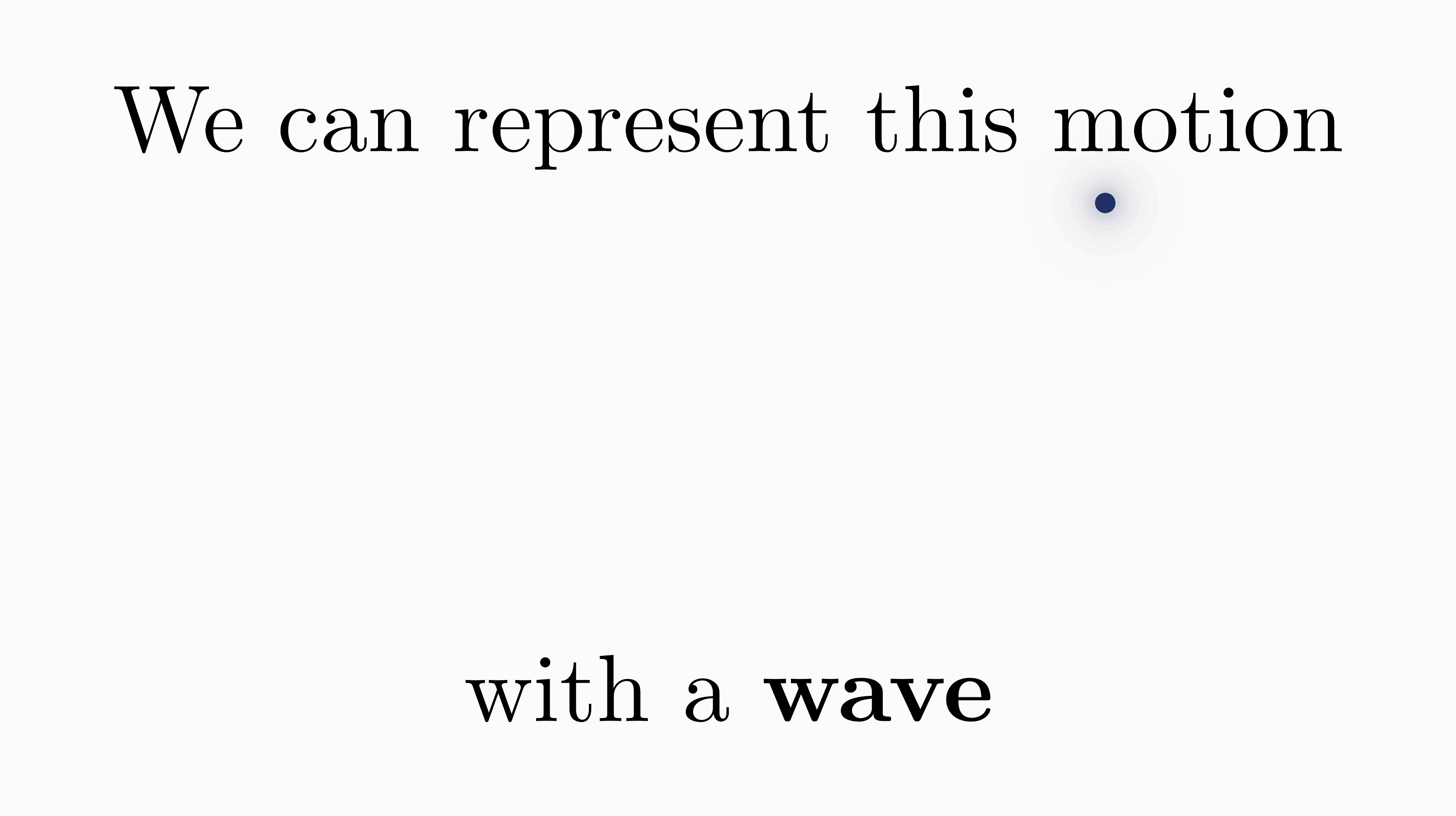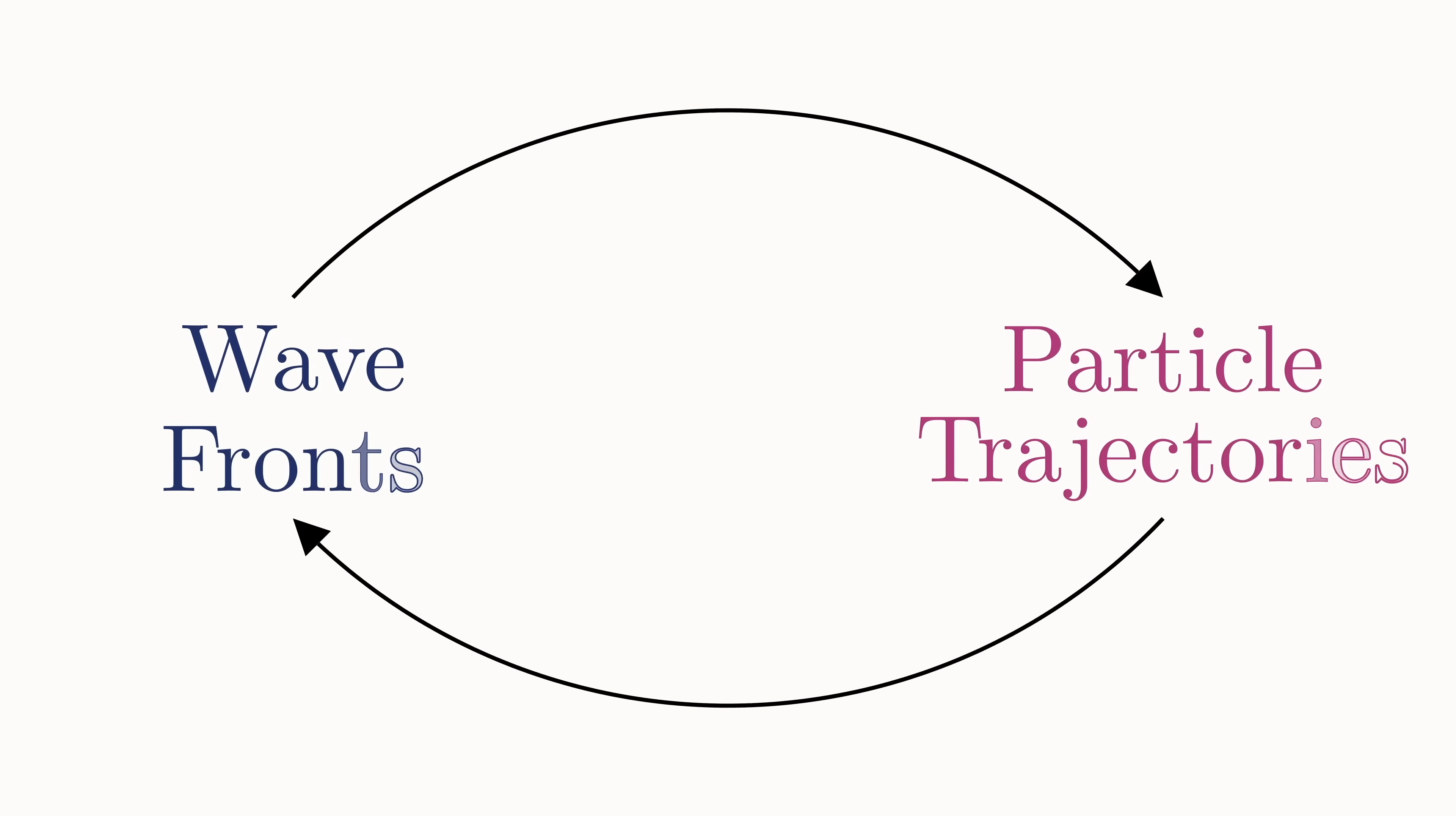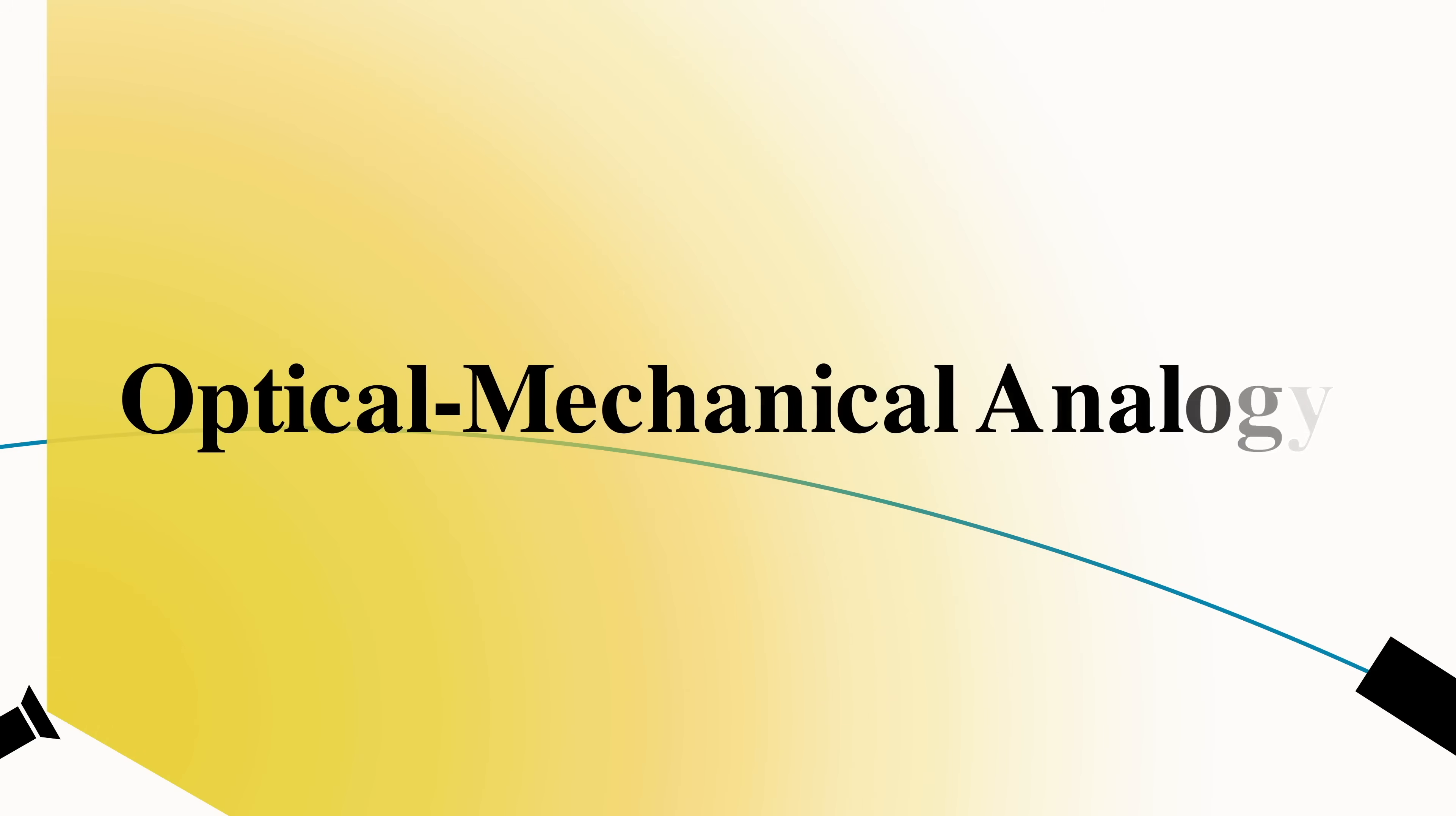He realized that the motion of a particle in classical mechanics can be represented by a wave. That's right, before quantum mechanics ever came on the scene, Hamilton discovered a version of wave-particle duality. Or rather, to be more precise, he discovered a duality between particle trajectories and wave-fronts. Not only that, he was able to show that both mechanics and optics contain this same type of duality, under a single framework now known as Hamilton's optical-mechanical analogy.